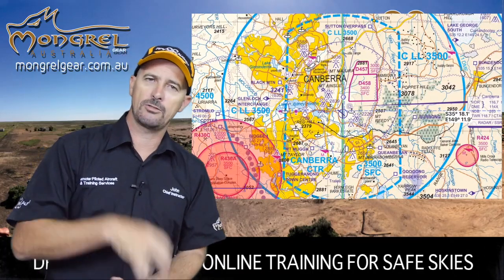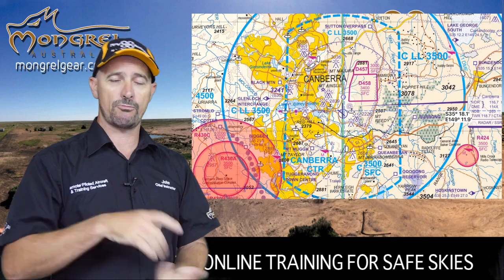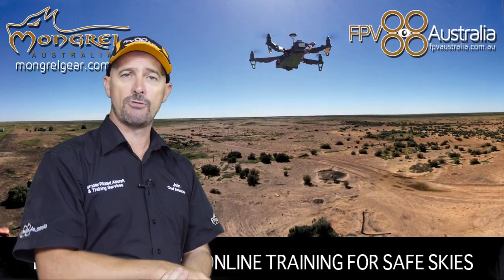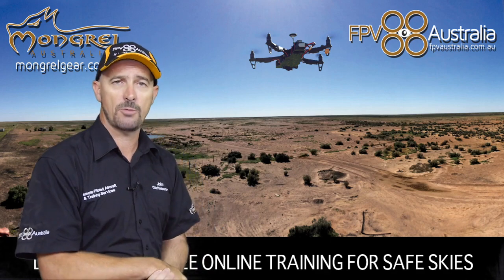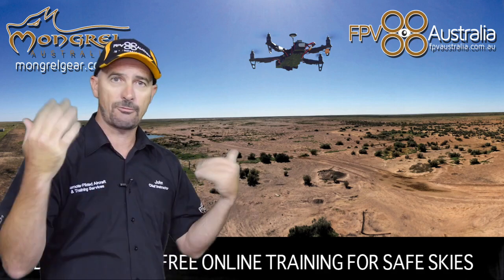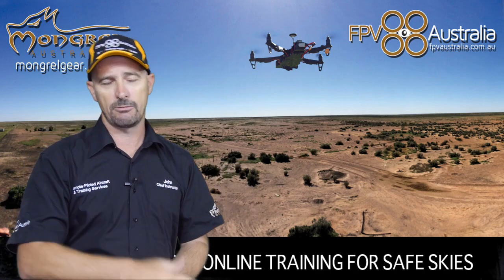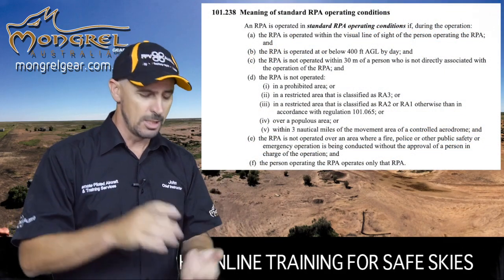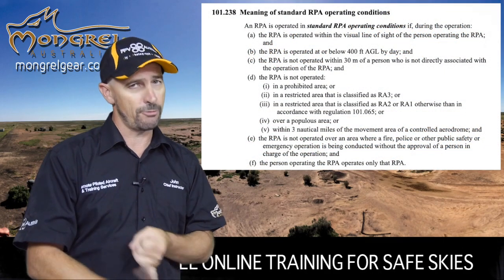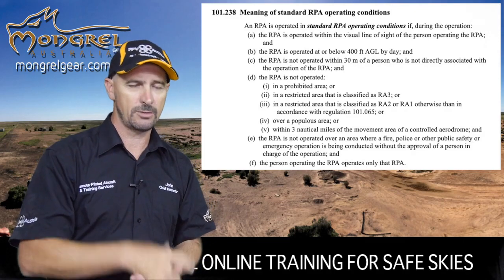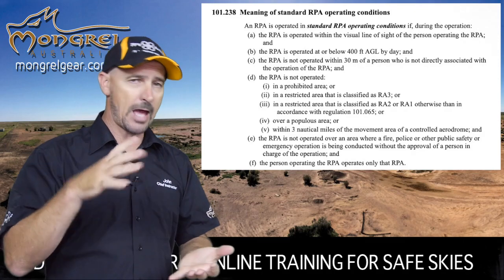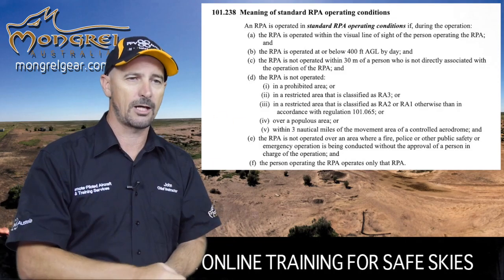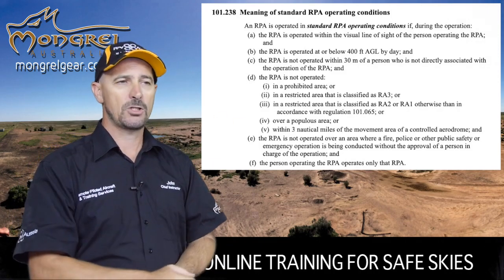What are the rules surrounding flying in controlled airspace for the recreational pilot and the sub two kilo operator? There aren't many rules outside the standard operating conditions. You're not allowed to fly within three nautical miles (5.5 kilometres) of that controlled aerodrome, but other than that, the standard rules apply — 400 feet, 30 metres, all that stuff. There's no need to contact anyone.